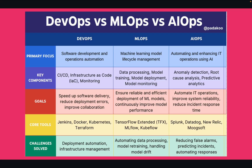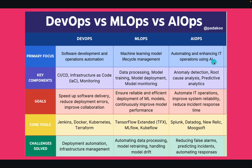To help you understand all these things in a simple fashion, I have created this comparison table. Here you can see the primary focus of each of these practices. DevOps deals with software development and operations automation. MLOps deals with machine learning model lifecycle management. And AIOps is about automating and enhancing IT operations using AI.